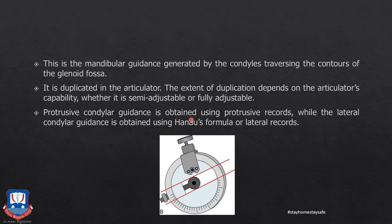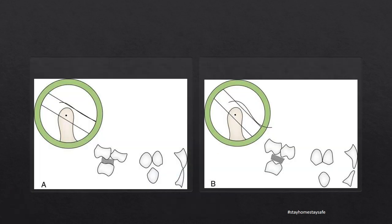Protrusive condylar guidance is obtained from protrusive records taken from the patient, and lateral condylar guidance is obtained using Hanau's formula or lateral records on articulators that accept them. When the condylar guidance is ideal — meaning minimal — during protrusion the posterior occlusion between the upper and lower dentures remains minimal. If the condylar guidance is steep, it creates excessive separation of the occluding surfaces of the posterior teeth during protrusion and retrusion, which is undesirable in complete dentures.